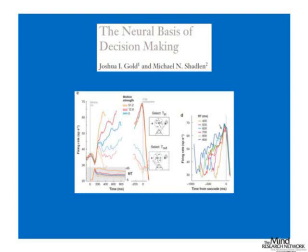Here's an example from the Shadlen-Newsome gold standard type work where monkey area LIP is suggested to reflect a drift rate — evidence accumulation rate. The more evidence, the steeper the rate. At the time of the response, the steepness of the slope of evidence accumulation corresponds to the speed of the response time. This process in parietal cortex, integrating evidence which comes in as a step-type function in medial temporal lobe for moving dots, has been suggested to represent a neural system for evidence accumulation — exactly how these drift diffusion models, which are older than 35 years, could very well be the neural representation of the latent parameter of drift rate.